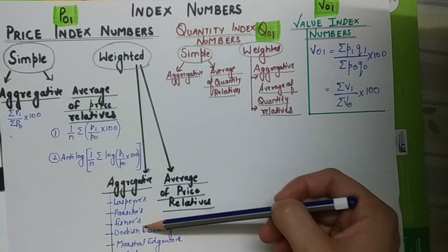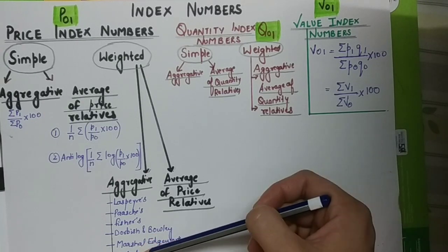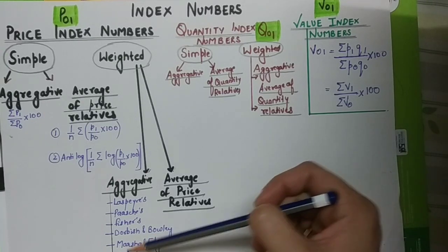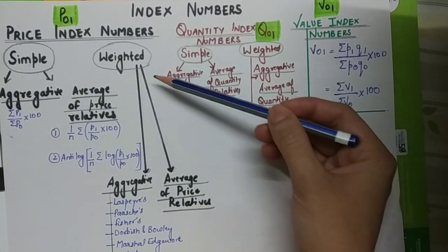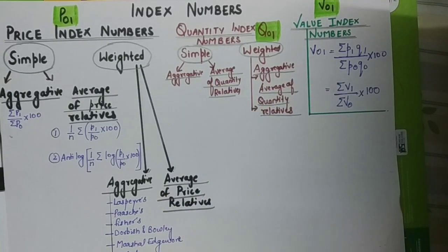Those seven methods are Laspeyre's, Paasche's, Fisher's, Dorbish and Bowley, Marshall-Edgeworth, Walsh, and Kelly. Today we will be covering the weighted average of price relatives method.